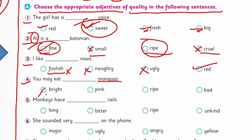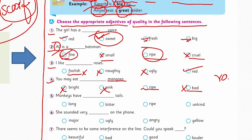Options for the fourth one are bright, pink, ripe, or bad. Mangoes can't be bright or pink. The quality can be ripe or raw. Since we don't have 'raw' as an option, 'ripe' is the correct answer — ripe mangoes.